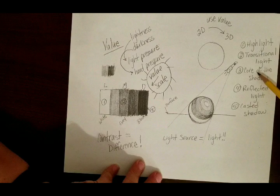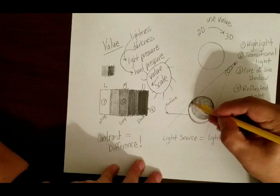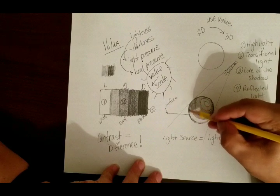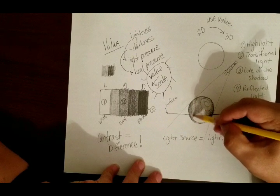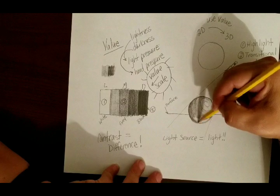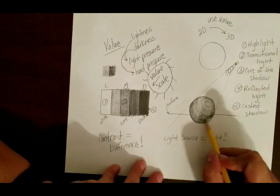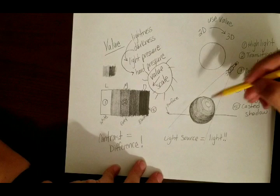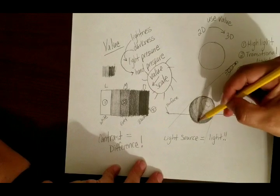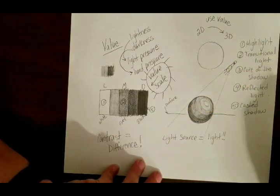Now our core of the shadow — this is the darkest spot we have on our object. This last little section is going to be the darkest, but remember it's not the darkest from the value scale, it's just the darkest on your object. So it should not be black — it should be like the darkest gray.